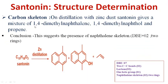Next, the carbon skeleton of centonin is examined. On distillation with zinc dust, centonin gives a mixture of 1,4-dimethylnaphthalene, 1,4-dimethylnaphthol, and propene. The formation of these products suggests the presence of a naphthalene structure in centonin, which corresponds to two double bond equivalents, confirming that two rings are present, giving a total of seven double bond equivalents.